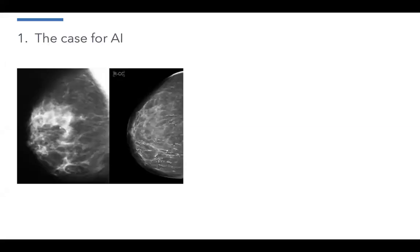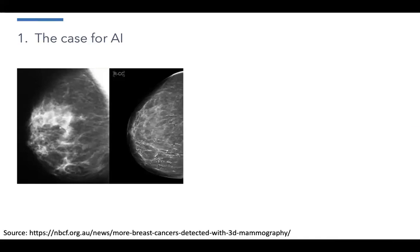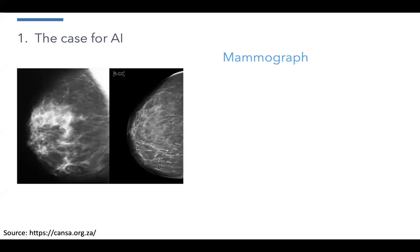When we think about the case for AI, this becomes an important starting place. This is an image — I can almost say with certainty, unless there's a doctor on the call, none of us know what we are looking at, why it's meaningful, or if it conveys any meaning at all. There are very few people in the country and in the world who are able to understand this particular image. What this image is, is actually a mammograph — an x-ray version of a breast. Doctors, particularly radiologists, use this to determine whether there are any cancerous cells within the breast.